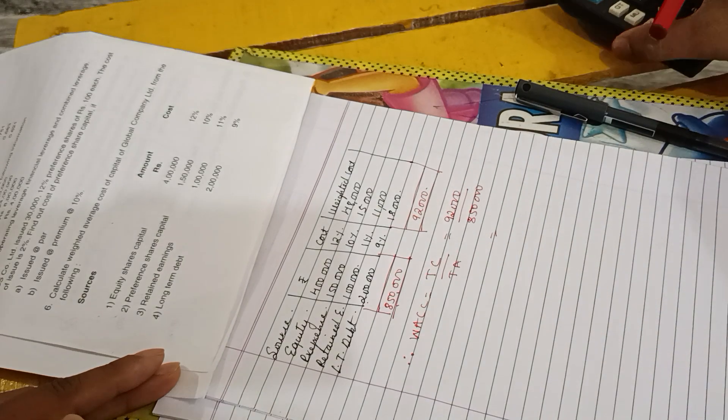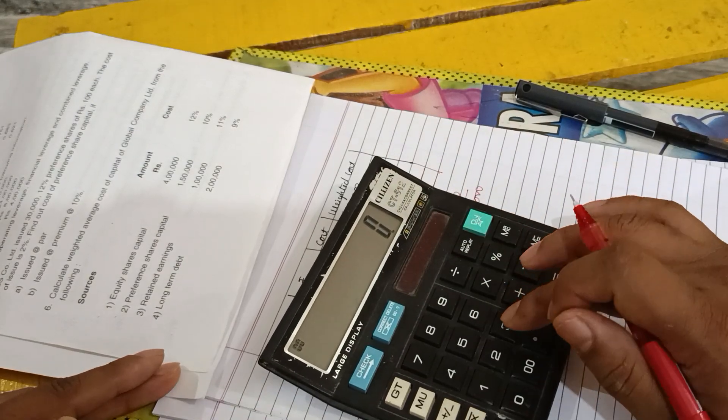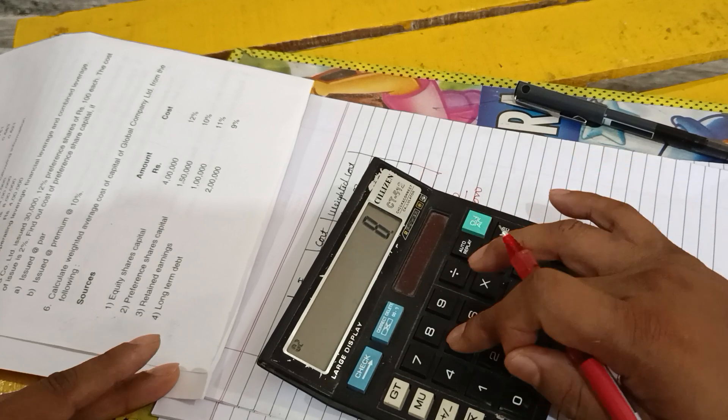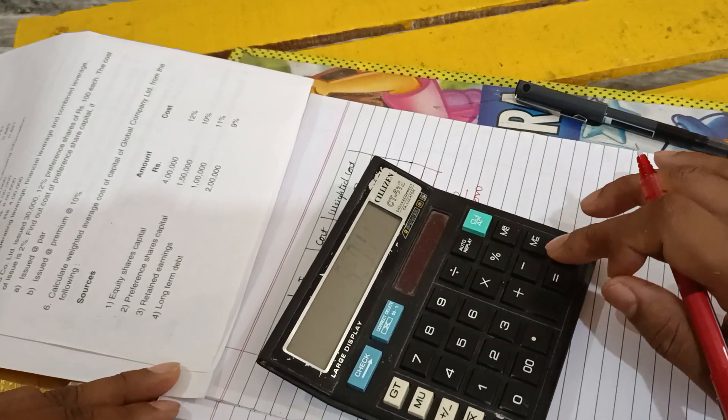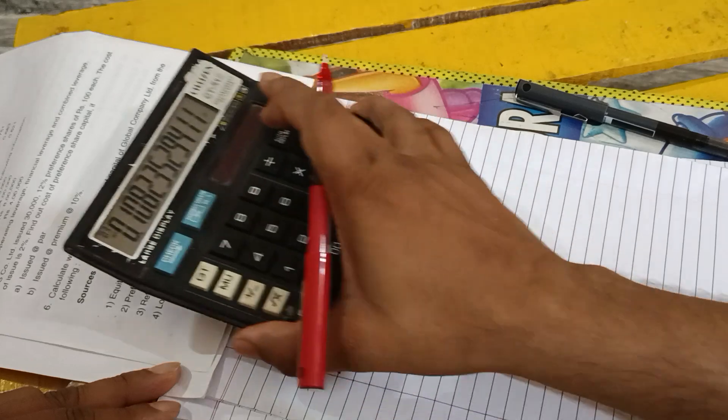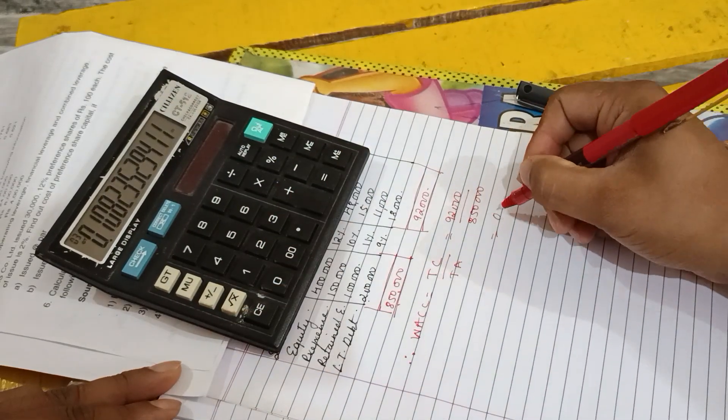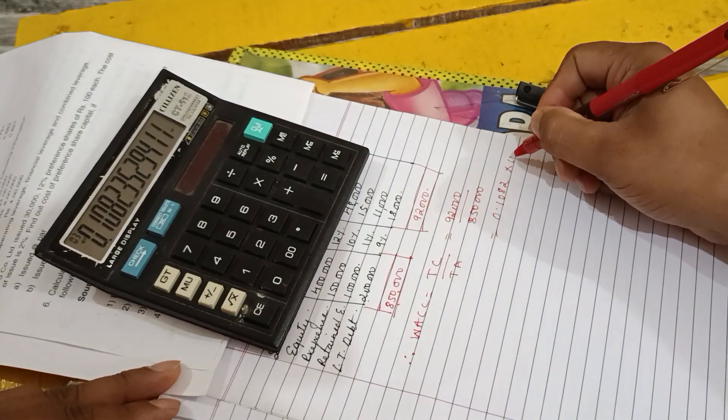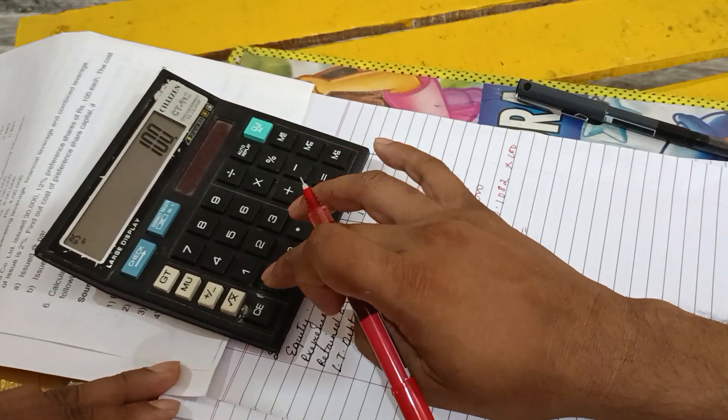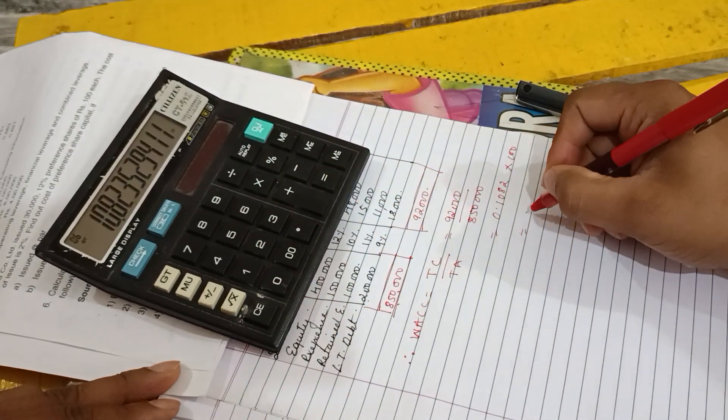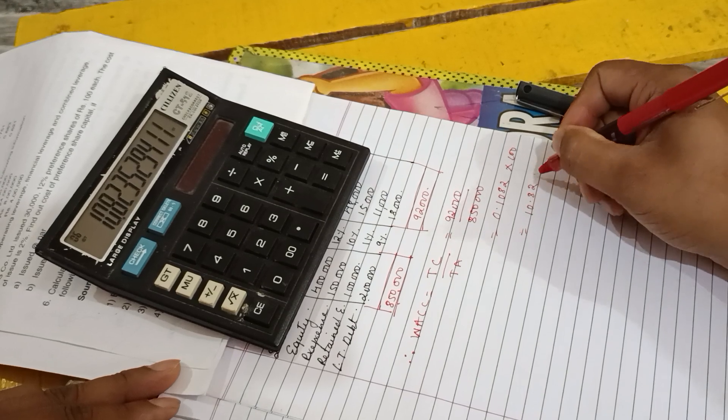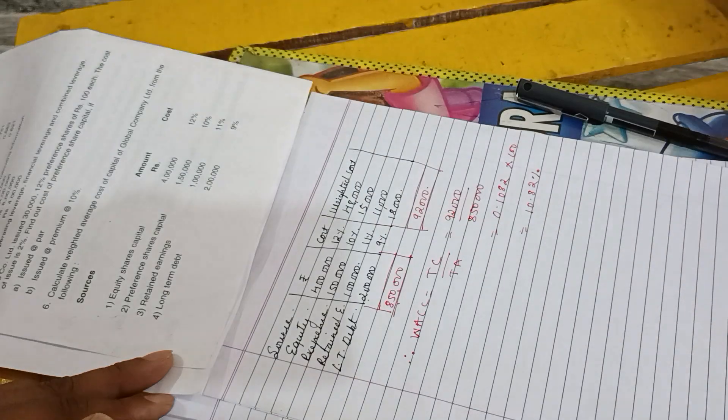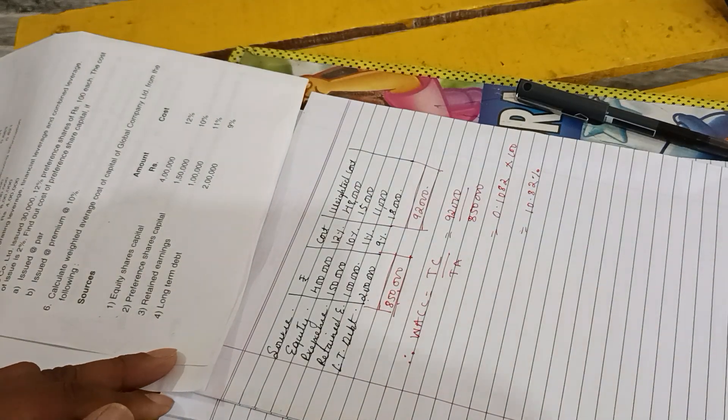So let me do it in a calculator. Ninety-two thousand divided by eight lakh fifty gives you zero point one zero eight. For this you have to multiply by 100. Answer is 10.82 percent. So this is the answer. In the previous method we also have this answer.